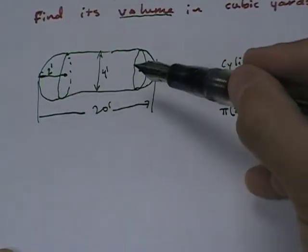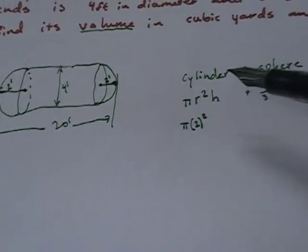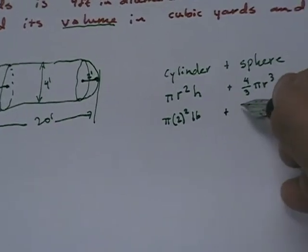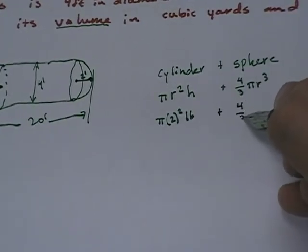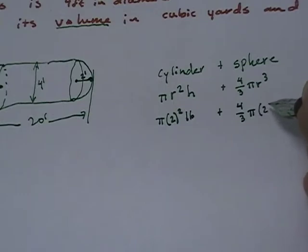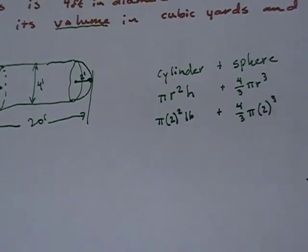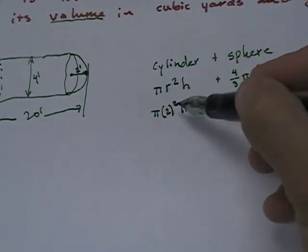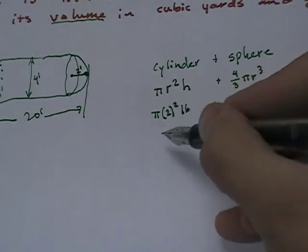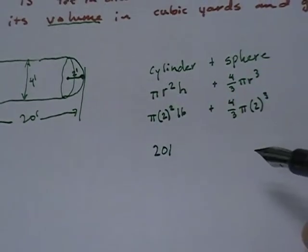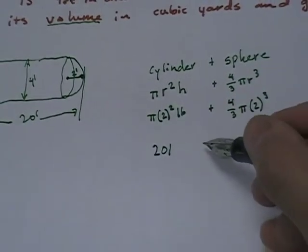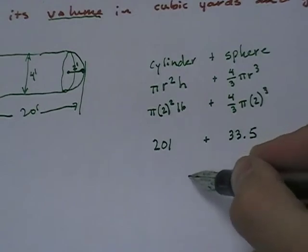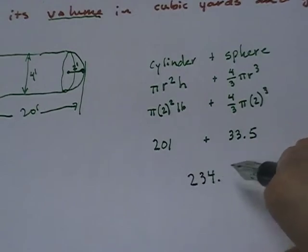And from here to here would also be 2 feet. Well, if that's 2 feet and that's 2 feet, this whole thing is 20. That means the height of the cylinder would be 16. And then of course, here this will be 4 thirds pi times 2 cubed. Now, if we do the math, pi times r squared times h, pi times 2 squared times 16, I get roughly 201 for the cylinder. And I get roughly 33.5 for the sphere. And I add those together and I get 234.5.